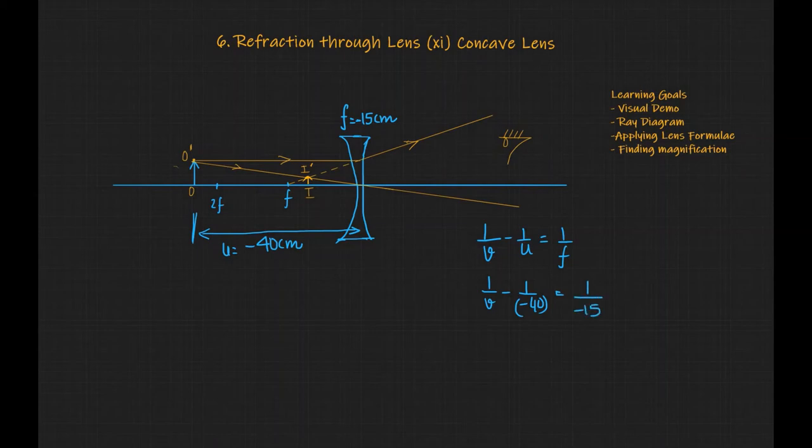1 by minus 15 or 1 by V is, 1 by V is, 1 by V minus 1 by 15 minus 1 by 40 and that's equal to minus eight minus three by 120 or V would be equal to minus 120 by 11 centimeters.